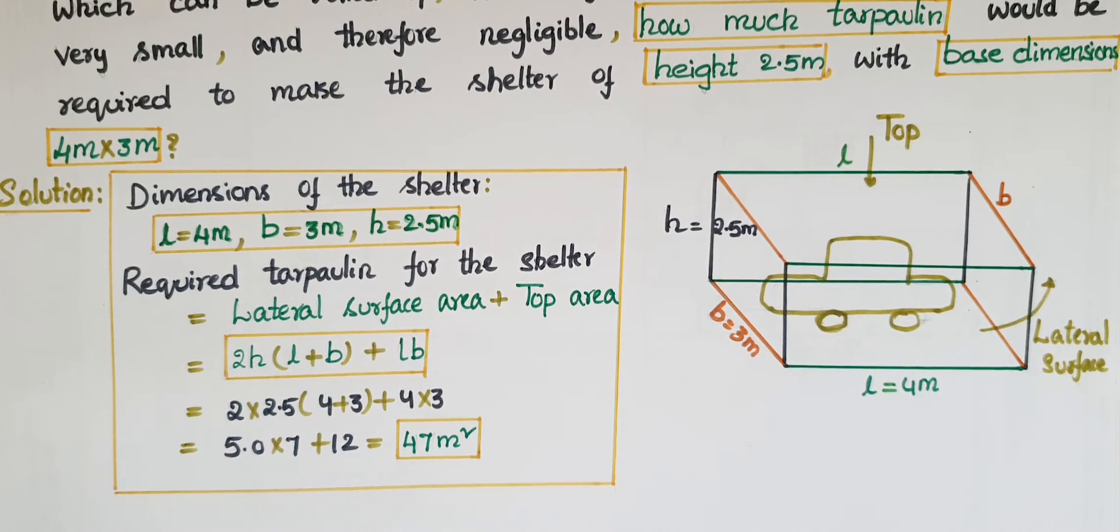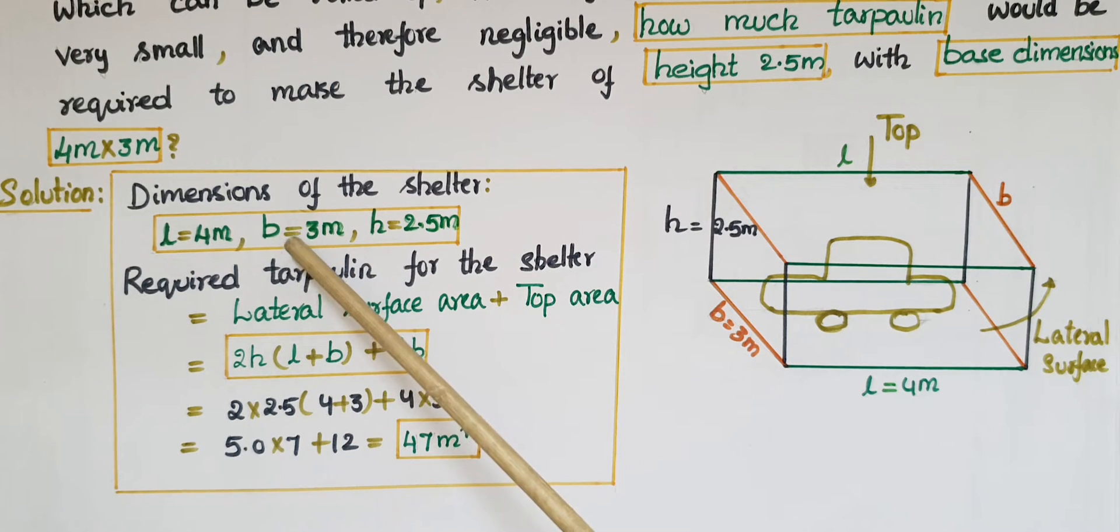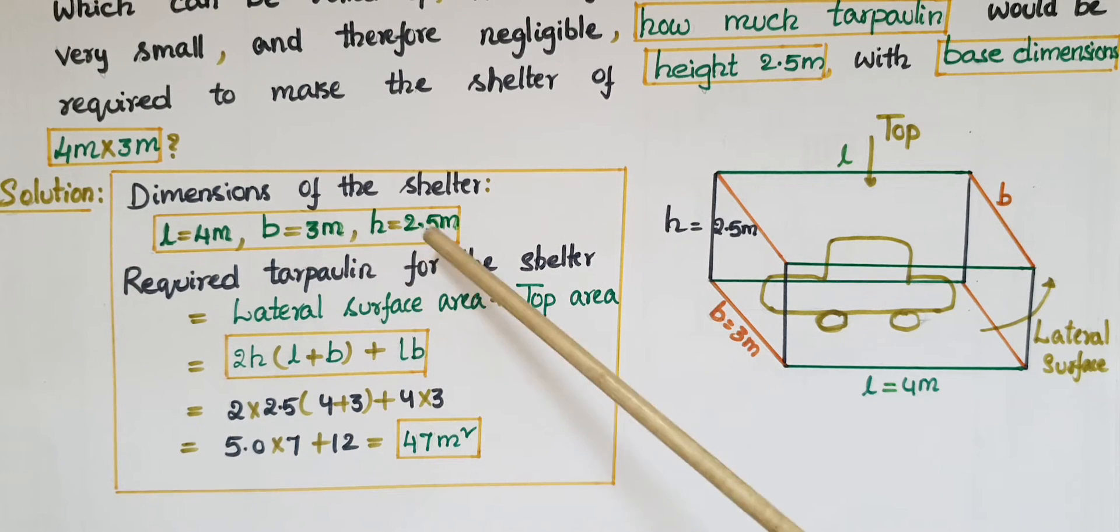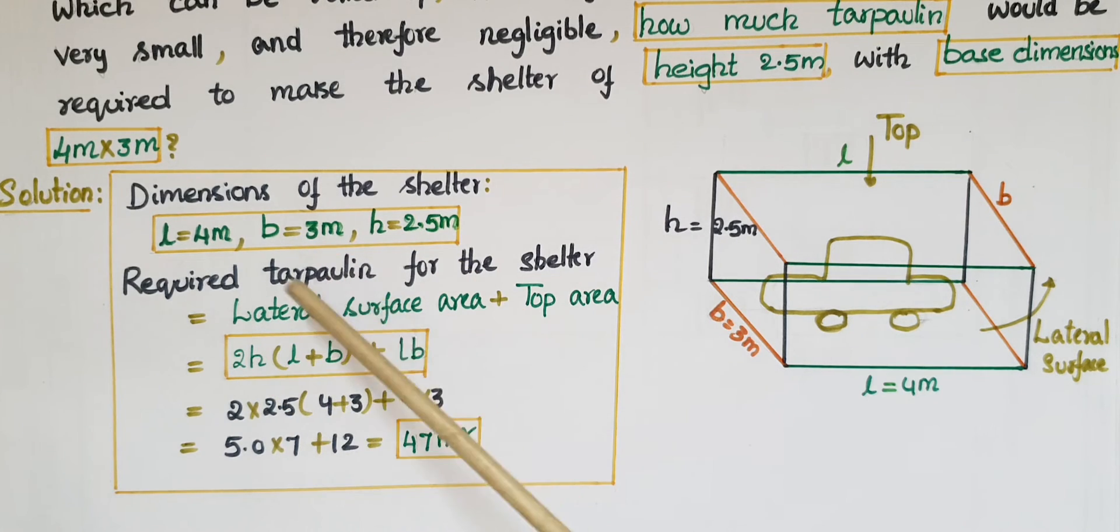So here we have to find the required tarpaulin. So dimensions of the shelter are given: L is equal to 4 meters, B is 3 meters, and height is 2.5 meters.